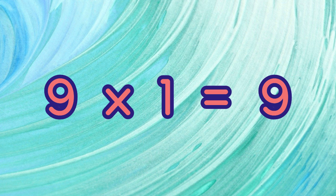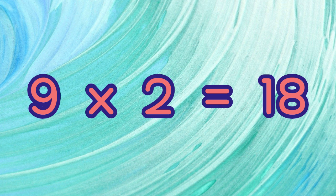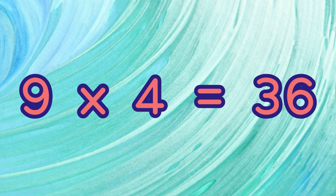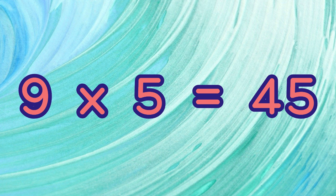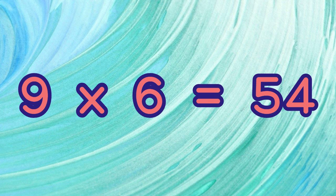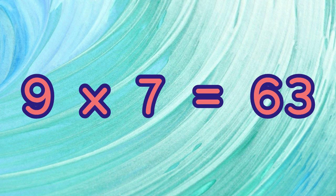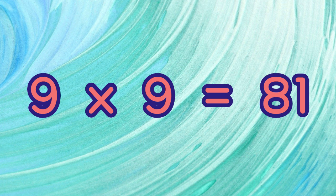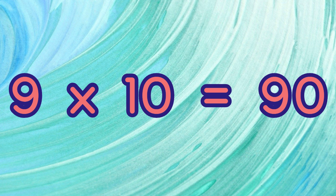9 times 1 equals 9. 9 times 2 equals 18. 9 times 3 equals 27. 9 times 4 equals 36. 9 times 5 equals 45. 9 times 6 equals 54. 9 times 7 equals 63. 9 times 8 equals 72. 9 times 9 equals 81. 9 times 10 equals 90.